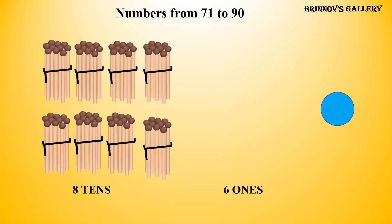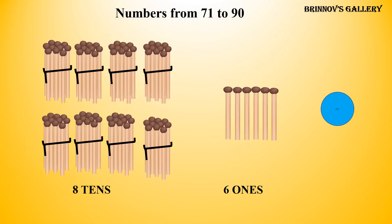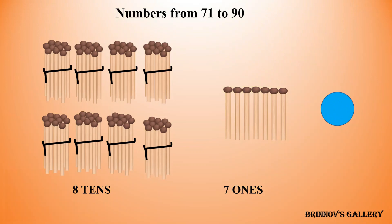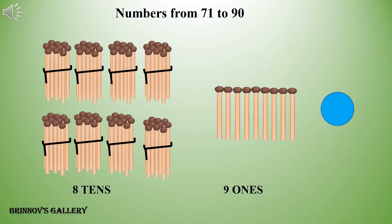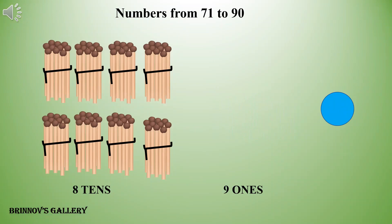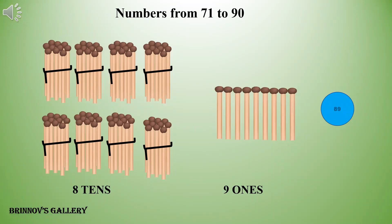8 tens, 6 ones — 86. 8 tens, 7 ones — 87. 8 tens, 8 ones — 88. 8 tens, 9 ones — 89.